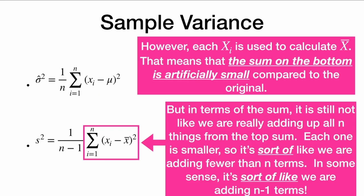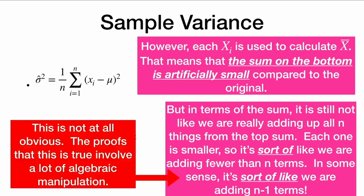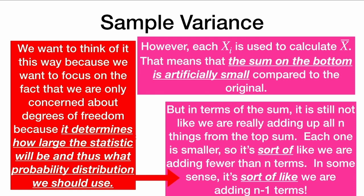In terms of this sum, it is not like we are really adding up all n things. Each one is smaller than in the top sum, so it's sort of like we are only adding up fewer than n terms — in some sense, like adding n minus one terms, because the last term is determined by the others. This is not obvious; the proofs involve a lot of algebraic manipulation. But the key point is that degrees of freedom determines how large the statistic will be and thus which probability distribution we should use.